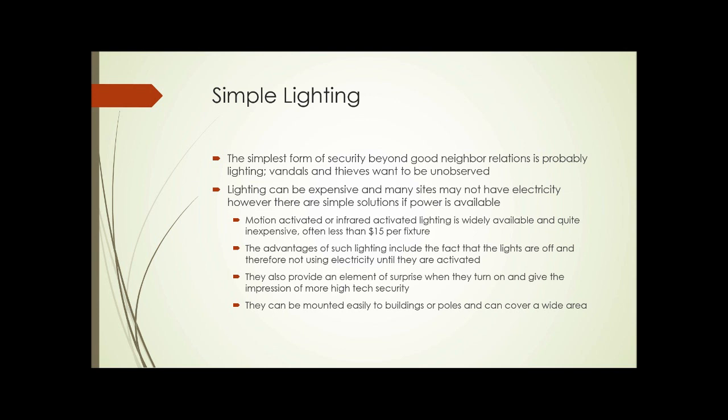Lighting is one of them. The simplest form of security beyond good neighbor relations and a few no trespassing signs is probably lighting. Vandals and thieves want to be unobserved, and if the site has decent lighting, they will often go somewhere else. Lighting can be expensive and many sites may not have electricity. However, if power is available, motion-activated or infrared-activated lighting is widely available at almost any home store — Lowe's, Home Depot, Menards — and is quite inexpensive, often less than $15 per fixture.